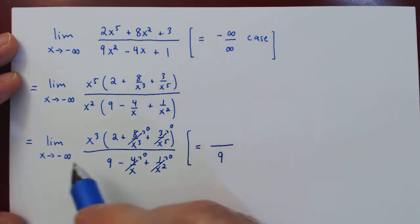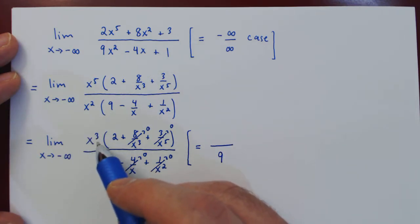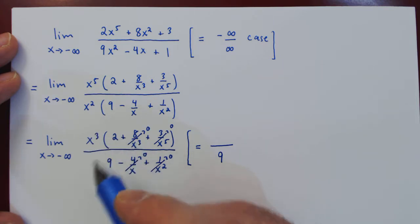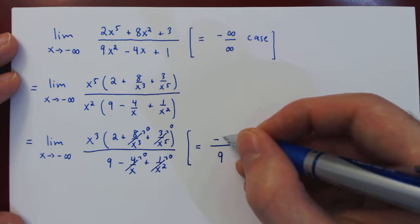And on the numerator, as x goes to negative infinity, x cubed goes to negative infinity, then times something close to 2 also goes to negative infinity.